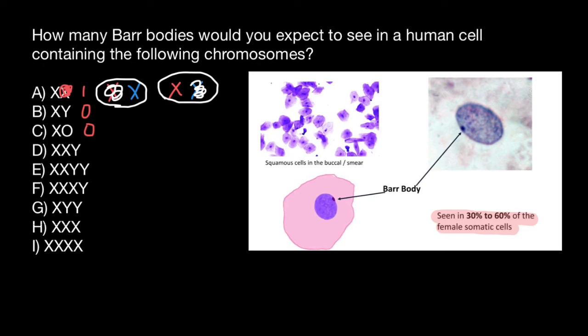Next, we have a Y chromosome and two X chromosomes. Whenever you see a Y chromosome present, no matter how many X chromosomes there are, this is going to be phenotypically male. So this is a male with one extra X chromosome (Klinefelter syndrome), and this extra X chromosome is going to form a Barr body — randomly, just like in females. So this is going to be a male with one Barr body.